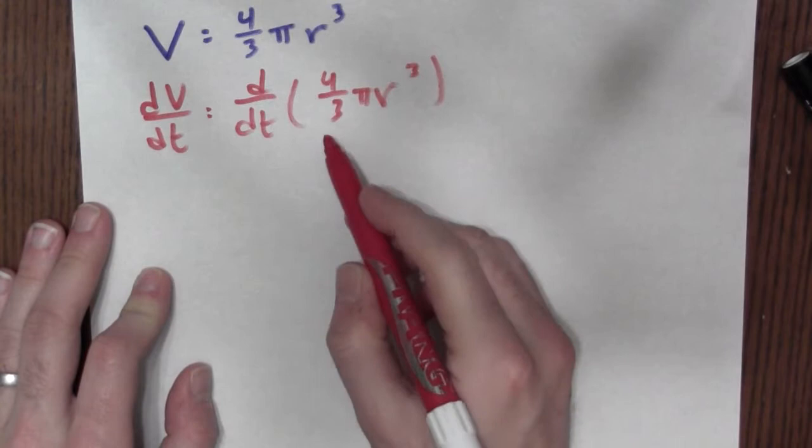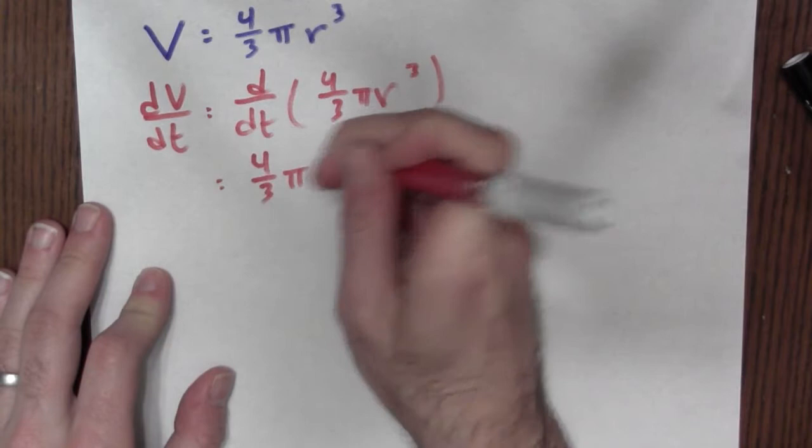Now 4/3 and π are just constants, so I can pull them out of the derivative. But I've still got to figure out what the time derivative of r³ is.